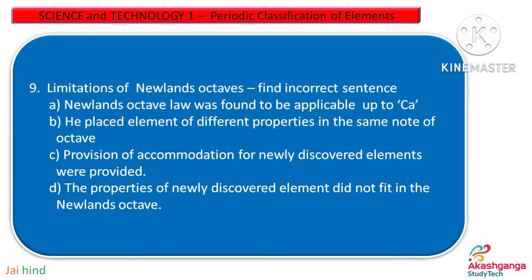Question 9. Limitations of Newlands Octave — find the incorrect sentence. Option A: Newlands octave law was found to be applicable up to Ca. Option B: He placed elements of different properties in the same note of octave. Option C: Provision of accommodation for newly discovered elements were provided. Option D: The properties of newly discovered elements did not fit in the Newlands octave.